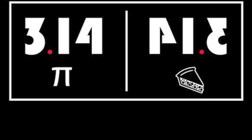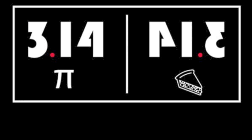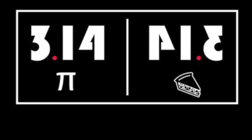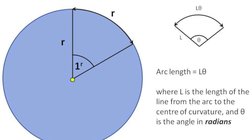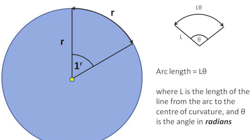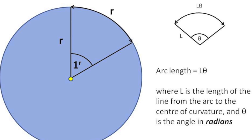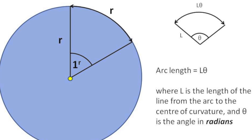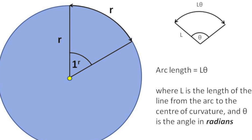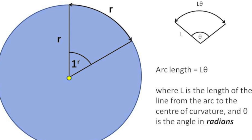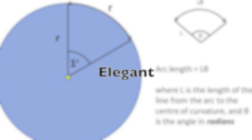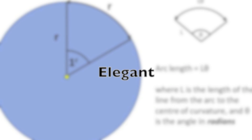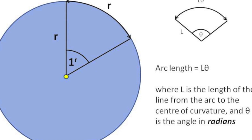Pi's relationship with the circle also leads to a unique way of describing angles. The length of an arc of a circle divided by the radius of the arc leads to an angle in radians, a more natural way of describing angles, resulting in more elegant trigonometric relationships.